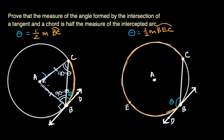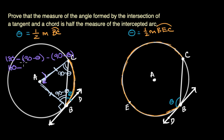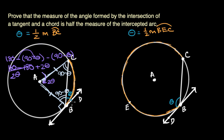The angles in a triangle add up to 180, so this central angle is going to be 180 minus (90 minus theta) minus (90 minus theta). Distributing the negatives and simplifying: 180 minus 90 minus 90 plus theta plus theta gives us two theta. This angle is two theta, which is the measure of arc BC. So we see that theta is indeed half the measure of the intercepted arc.